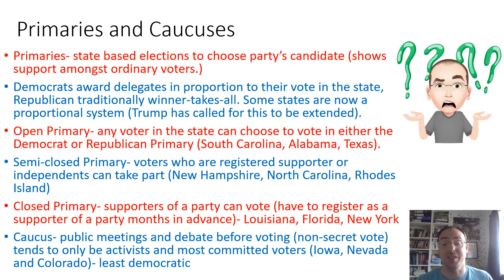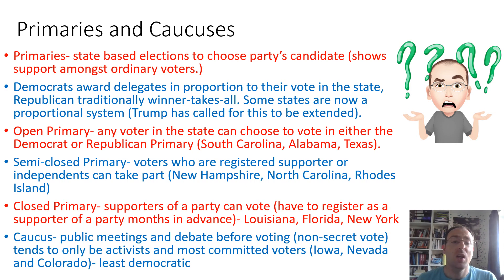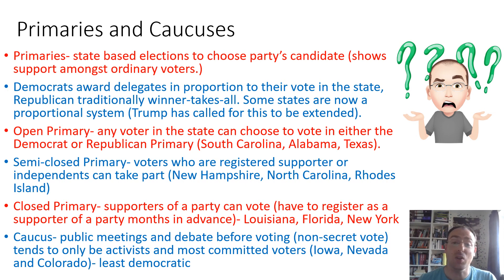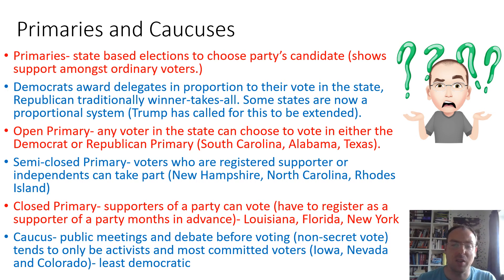So primaries and caucuses — this is where the real stuff starts following the invisible bit beforehand, where we actually start to see some voting take place. A primary is a state-based election to choose the party's candidate, and this shows support amongst ordinary voters. Democrats award delegates in proportion to the vote in the state, whilst Republicans traditionally do winner-takes-all primaries, though some states are now using a more proportional system. Trump has called for this to be extended in the Republican Party.